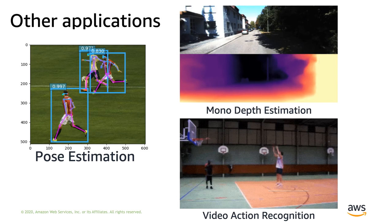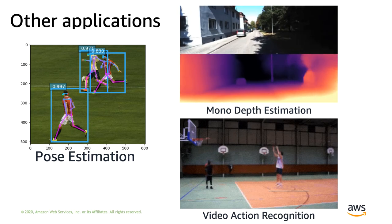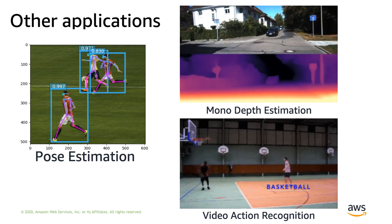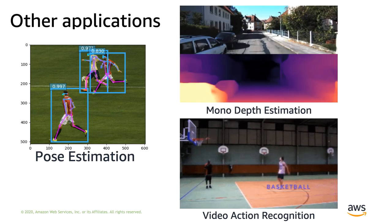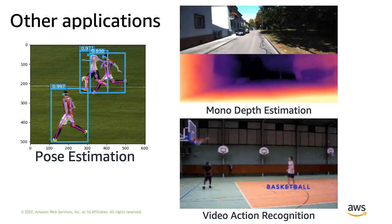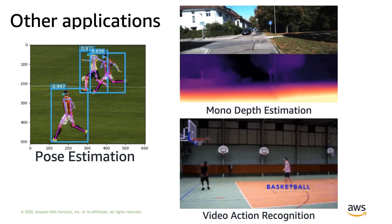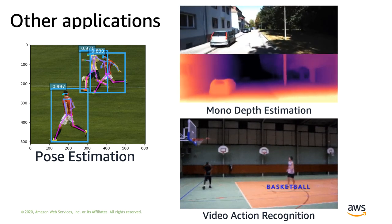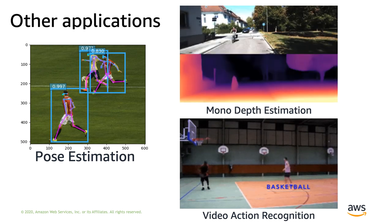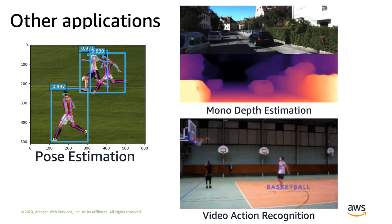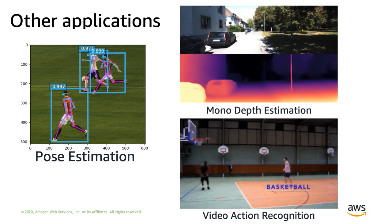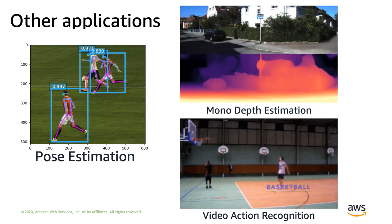There are other applications I would like to talk about. I have shown three different new applications in GluonCV. One is pose estimation, one is video action recognition, and another one is the mono-depth estimation model. With pose estimation, you can get the joints and skeleton details of a person detected in individual images. With video action recognition, you can analyze videos with a model that can identify the events inside a video clip. You can also use mono-depth estimation to detect depth from single-view images, so you won't necessarily need a stereo camera.